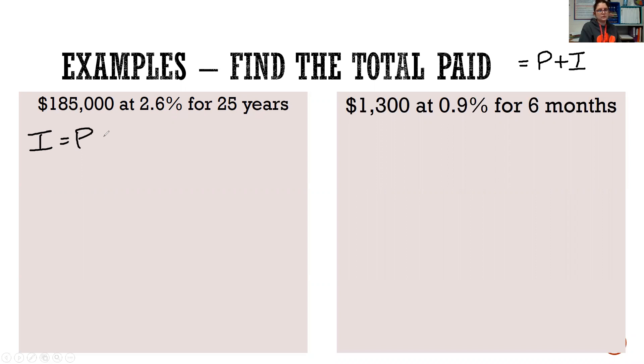So I equals P times R times T. The principal, the starting amount you borrowed is $185,000. You're borrowing at 2.6% interest. We're going to divide that by 100 and get 0.026. And you're borrowing the money for 25 years. It's going to take that long to pay it off. So we're going to multiply everything together.